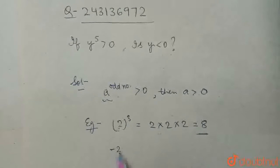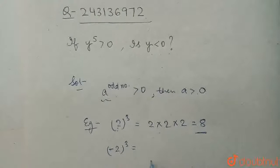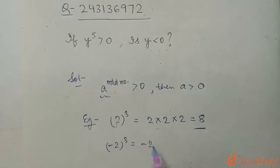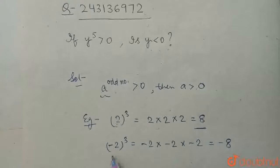And a negative number raised to the power of an odd number will always be negative. That is, minus 2 times minus 2 times minus 2, that is, it will be minus 8. So, a negative number raised to the power of an odd number is always a negative value.